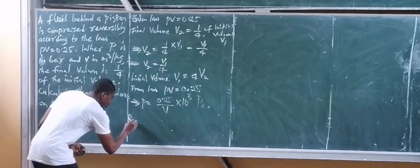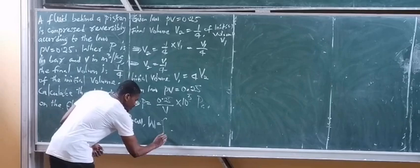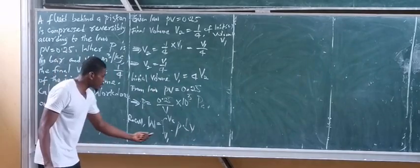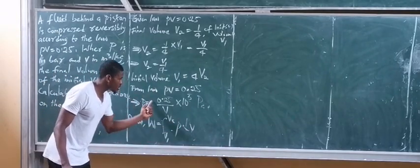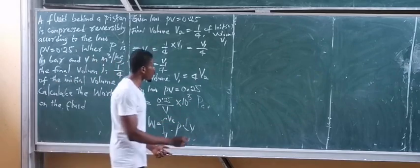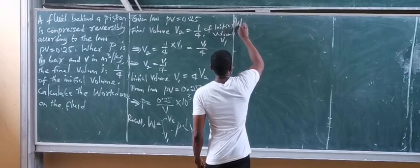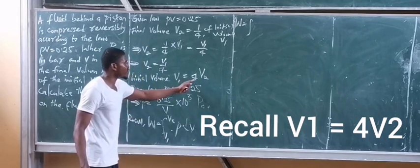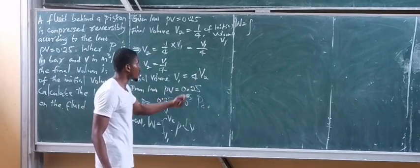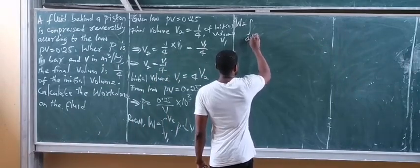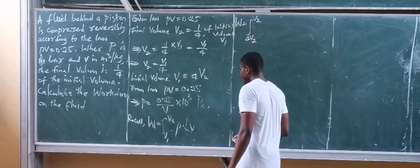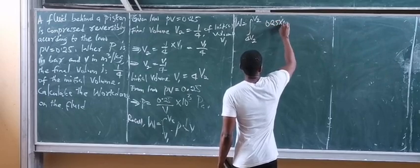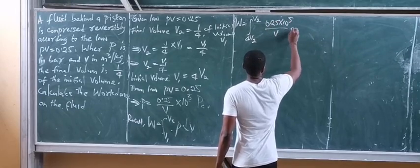Work done is an integral from initial volume V1 to final volume V2 of pressure and change in volume. We now know what the pressure is. In place of V1, we put 4V2. So we have work done equals integral from 4V2 to V2 of P dV, which is 0.25 times 10 to the power of 5 over V, dV.